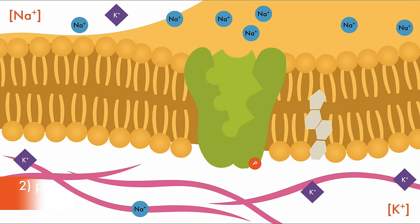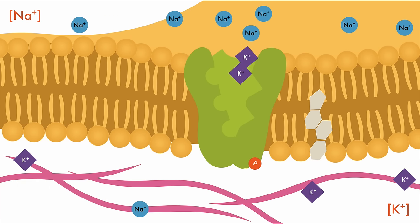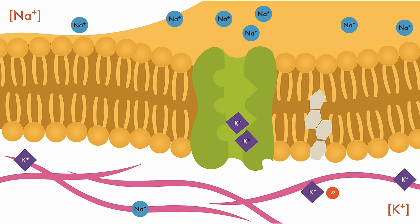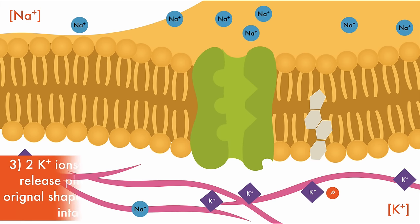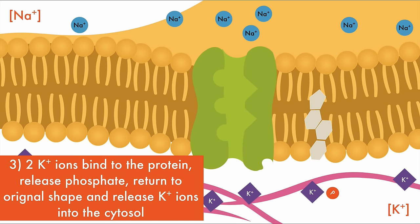Now, two potassium ions will enter the pump, which causes the phosphate to break off and return the pump to its original shape, releasing the potassium into the cytosol. Again, sodium will diffuse into the cell on its own, and potassium will diffuse out. The pump forces the sodium to be outside the cell, and the potassium to be inside the cell.